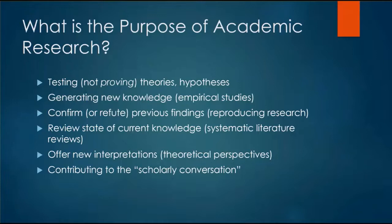Scholarly articles can also review the state of current knowledge in a field. These are called literature reviews or systematic literature reviews, where all the author or authors do is read everything they can find on that topic within a certain time frame, summarize those articles and compare and contrast them, to develop what is the state of knowledge in our field.